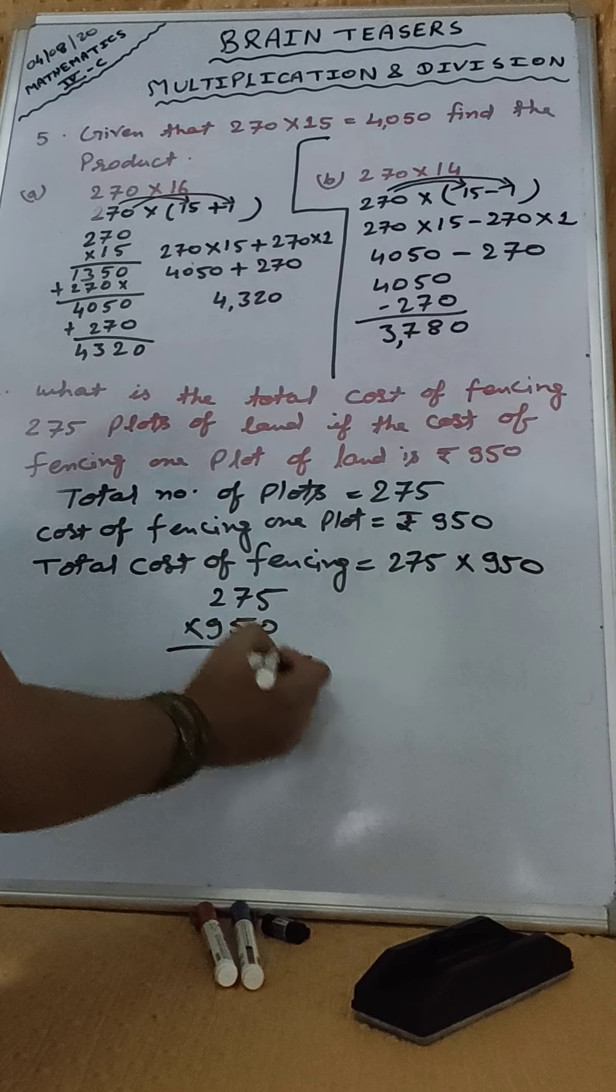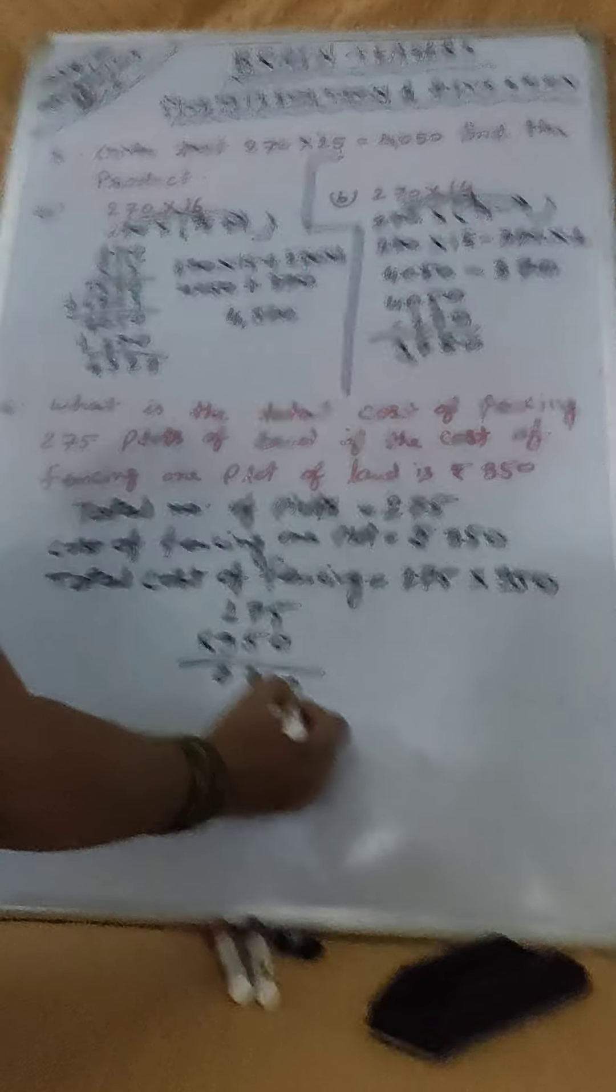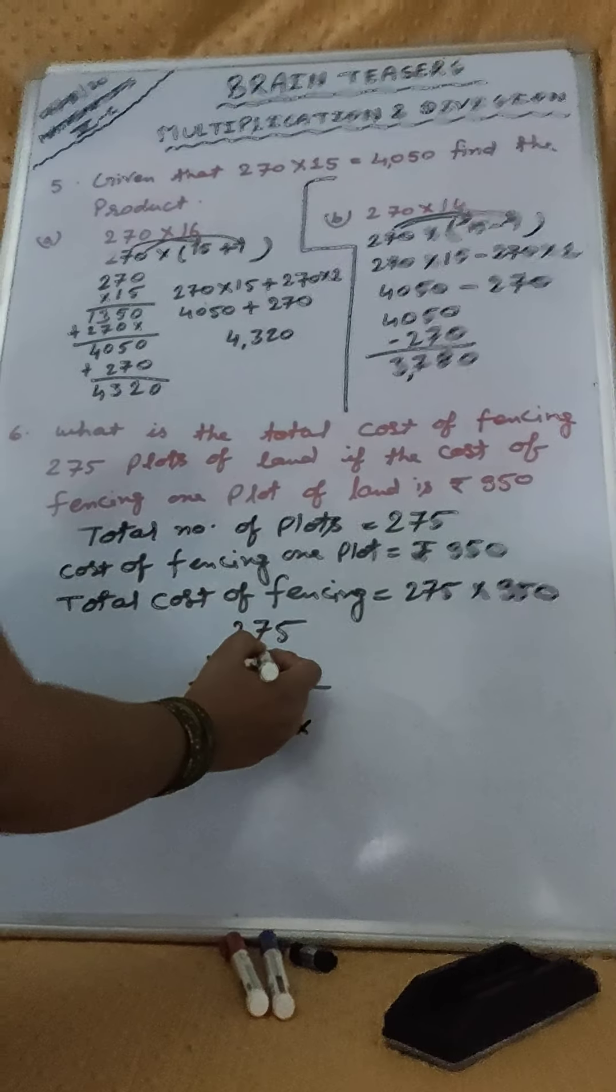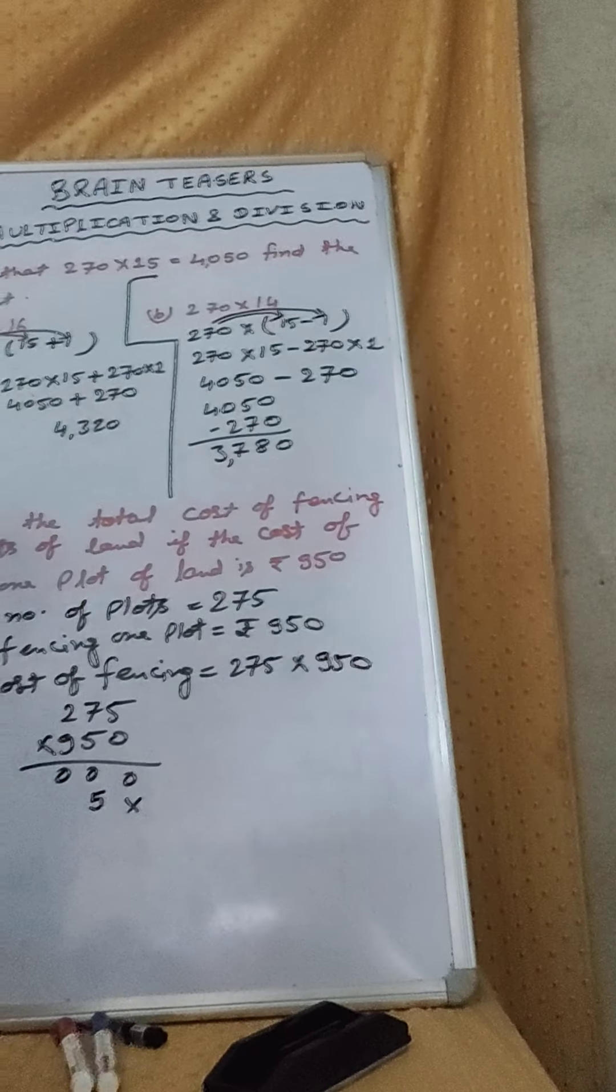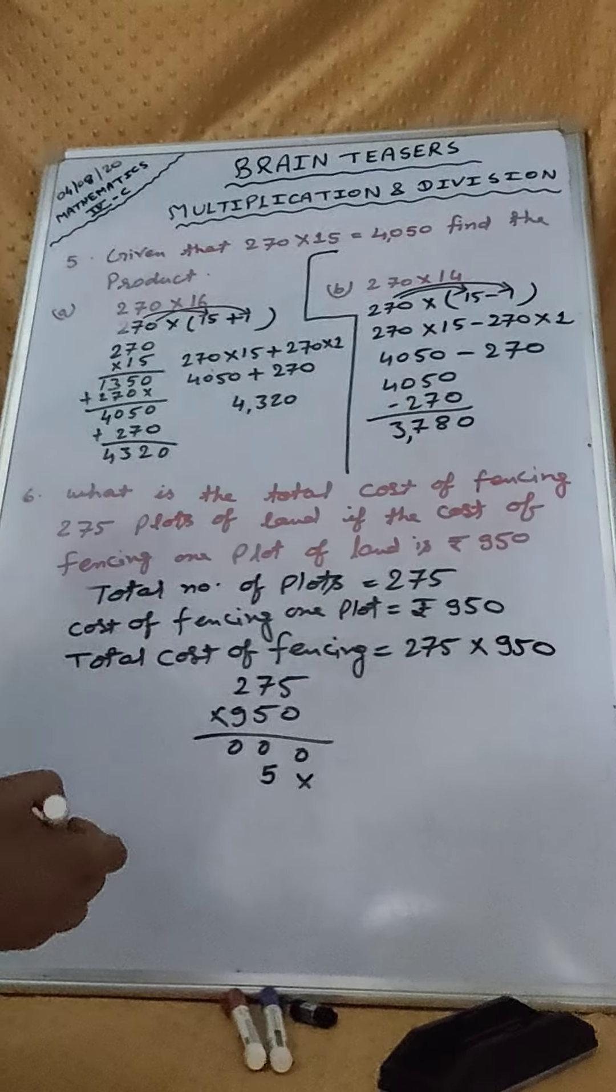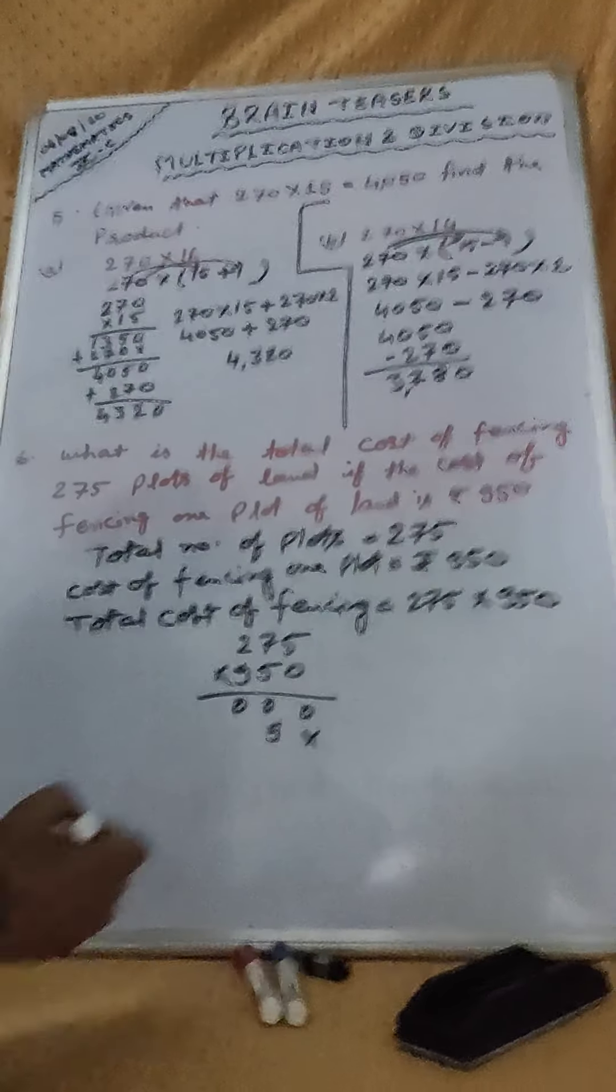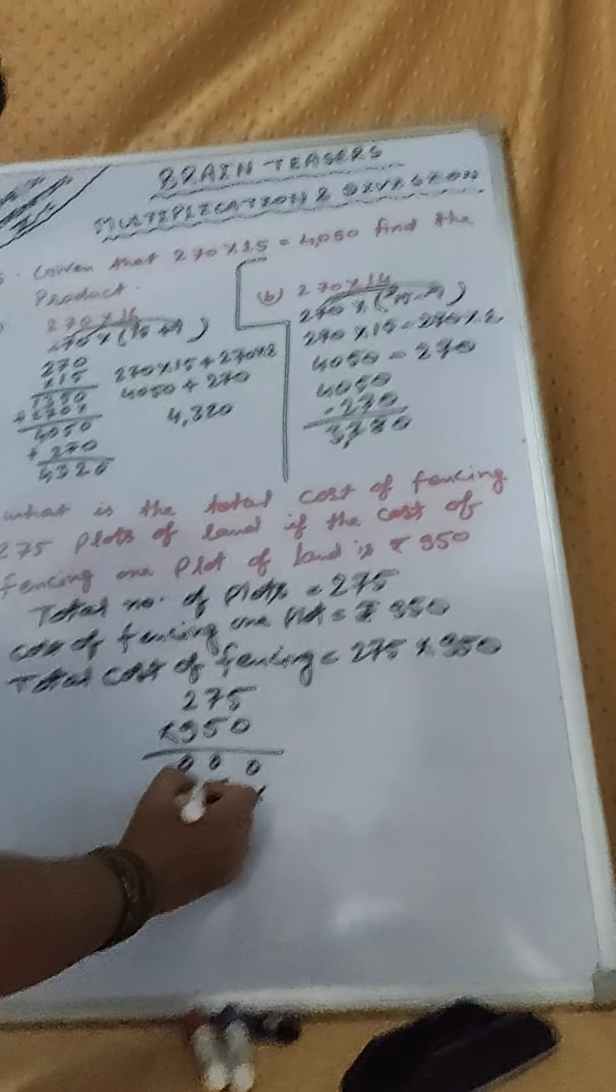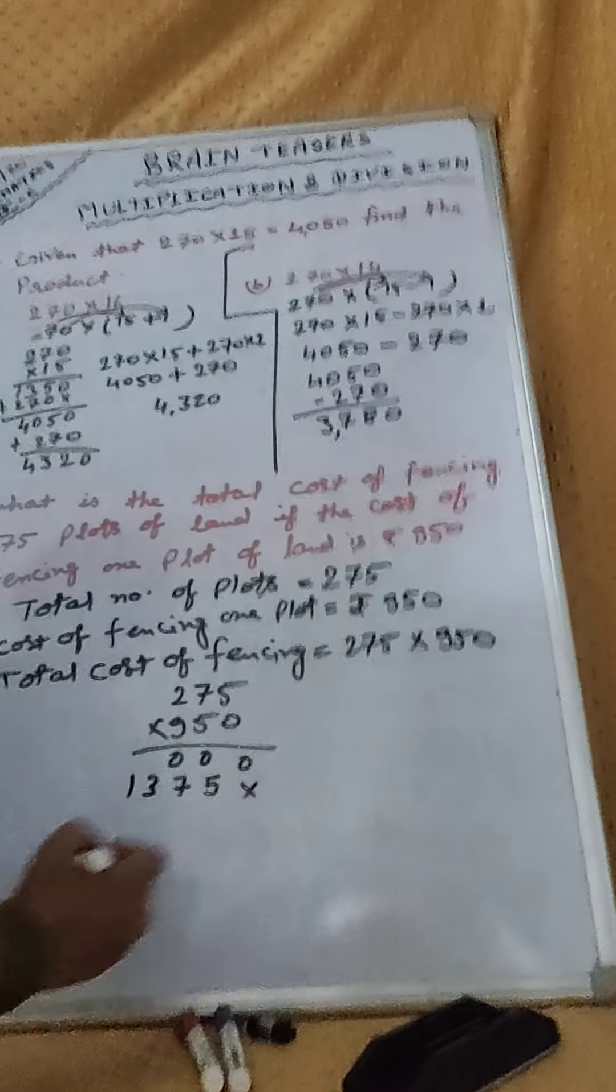We will multiply here. 0 into 5, 0. 0 into 7, 0. 0 into 2, 0. Put here cross symbol. 5 5, that 25. We should write here 5, carry 2. 7 5, that 35, plus 2, 37. Write here 7, carry 3. 5 to 0, 10 plus 3, 13.